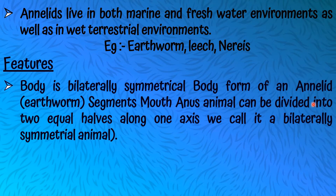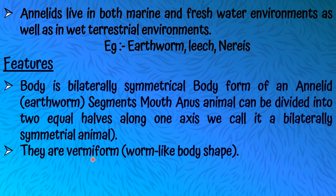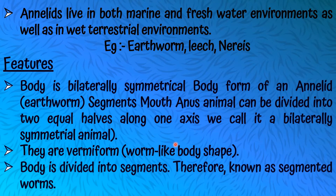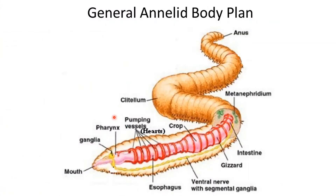Let's talk about the features of Annelids. The body is bilaterally symmetrical. Bilaterally symmetrical means the animal can be divided into two equal halves along one axis only — for example, from mouth to anus. So Cnidarians have radially symmetrical bodies and Annelids have bilaterally symmetrical bodies. They are wormiform, meaning they have a worm-like body shape. The body is divided into segments, therefore they are known as segmented worms.